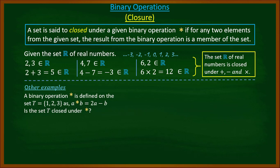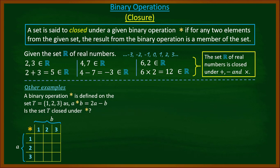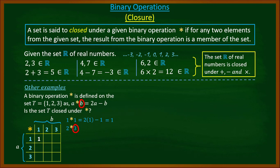We have three elements in the set, so we create a table. The elements in the column represent a and the elements in the row represent b. Picking one star one: a = 1, b = 1, so 2(1) − 1 = 1. We put one here. Then picking two star three: a = 2, b = 3, so 2(2) − 3 = 1. We put one here.